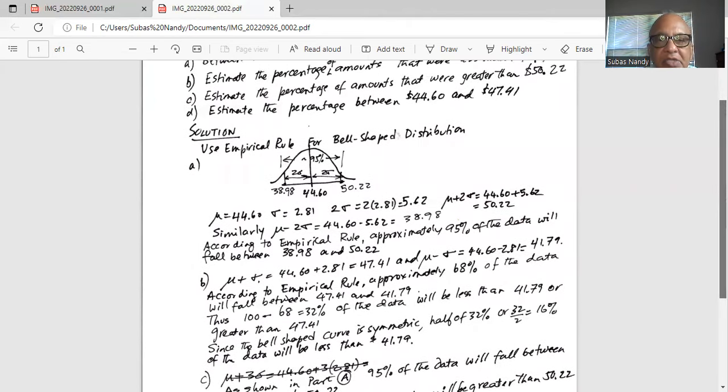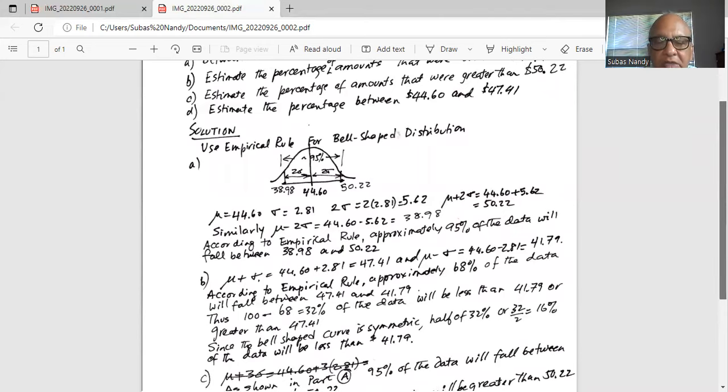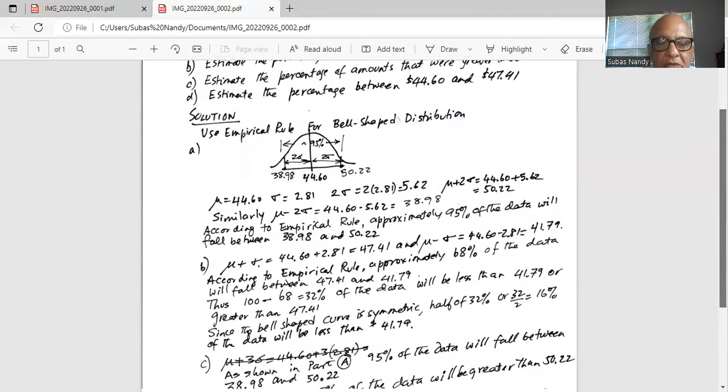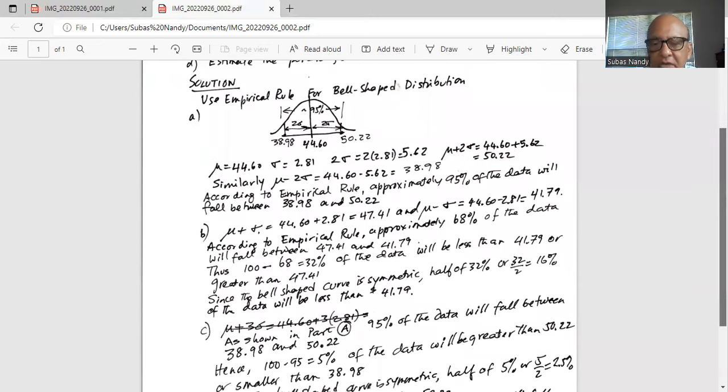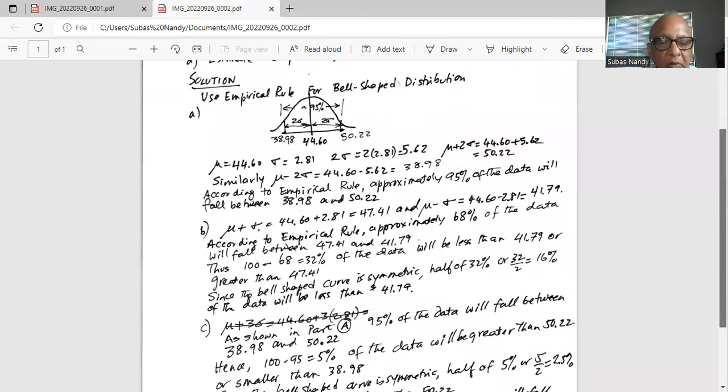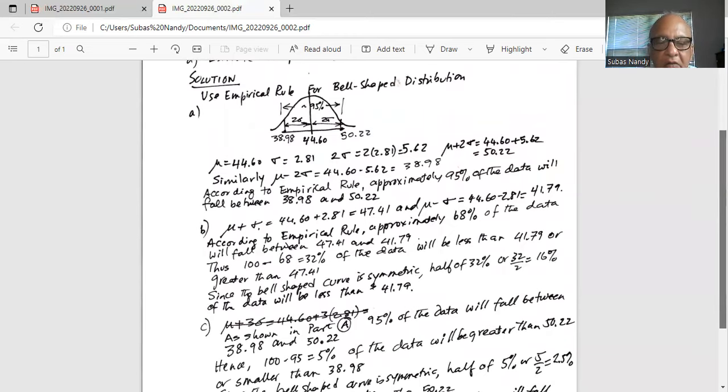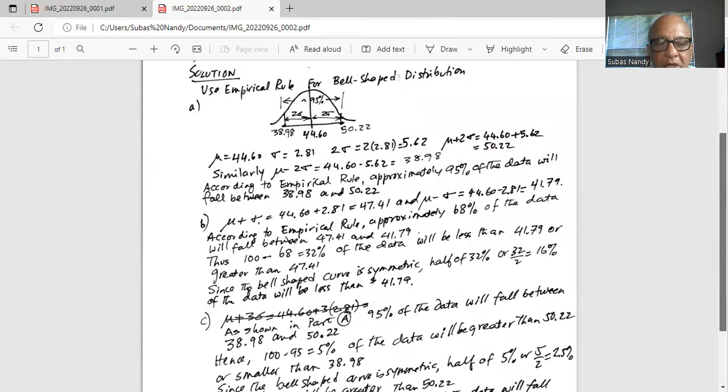For part c, estimate the percentage of the amounts that were greater than 50.22. As I have shown earlier, approximately 95% of the data will fall between 38.98 and 50.22.